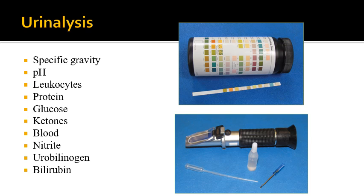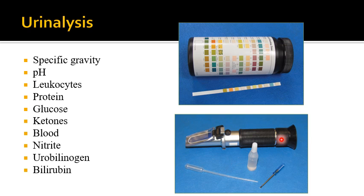This is the dipstick analysis. There is a specific way to perform a clean urine catch to ensure accuracy. A refractometer is a more accurate way to measure specific gravity and determine the level of hydration, more accurate than using a chem strip for that purpose.